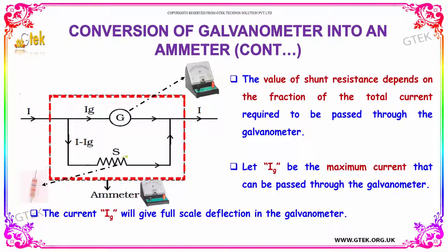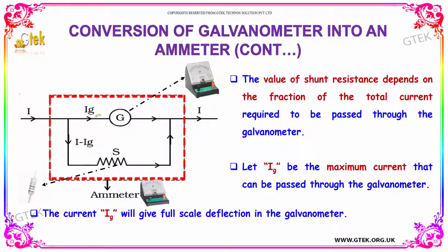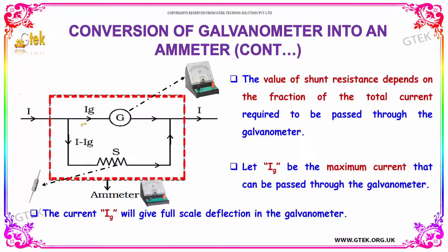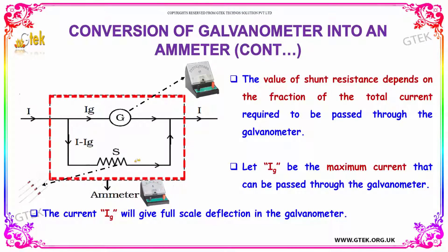The value of shunt resistance depends on the fraction of the total current required to be passed through the galvanometer. Let I_g be the maximum current that can be passed through the galvanometer, where the current passed through the shunt resistance is I minus I_g. The total current is I, and I minus I_g is the current passed through the shunt. The current I_g will give full deflection in the galvanometer.